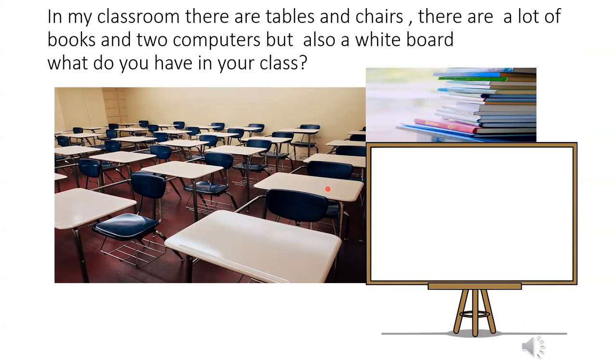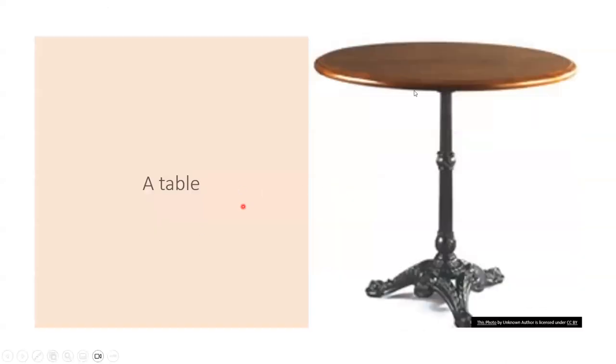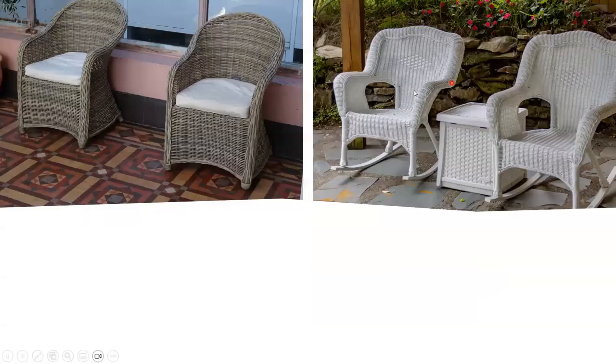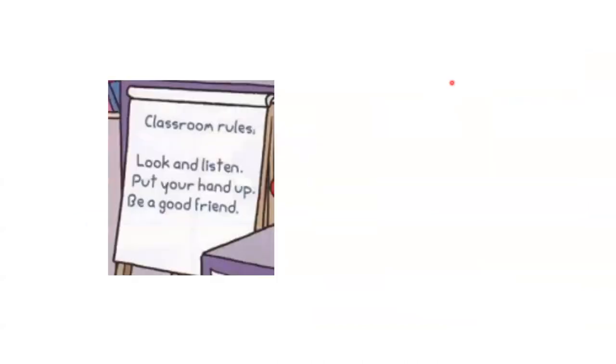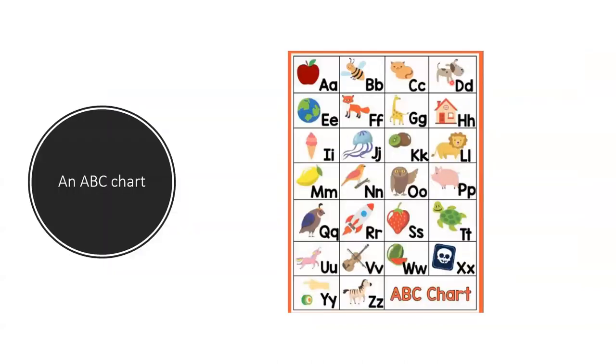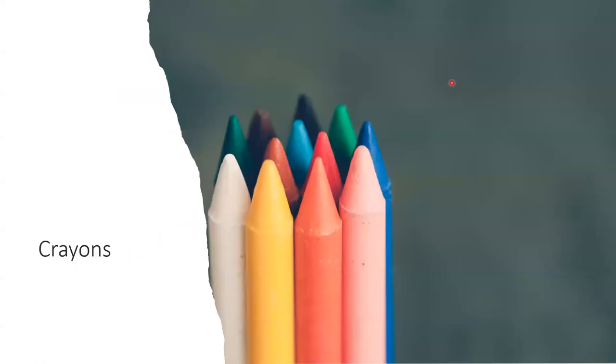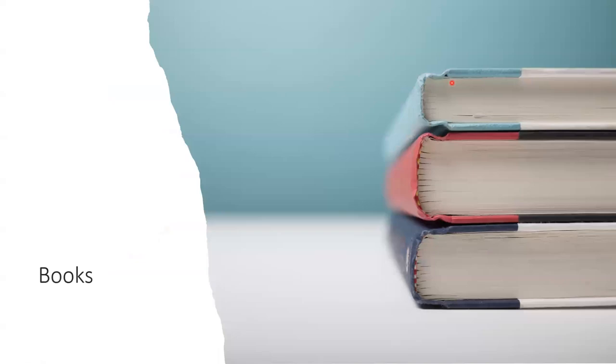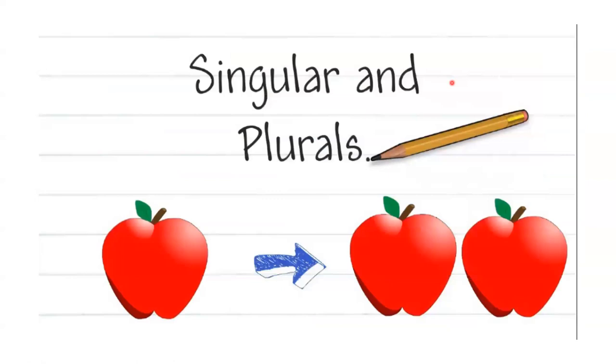Track 6: A table. Chairs. Classroom rules. An ABC chart. Crayons. A clock. Books. Computers. A whiteboard.